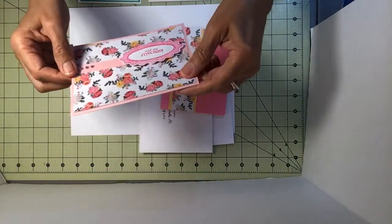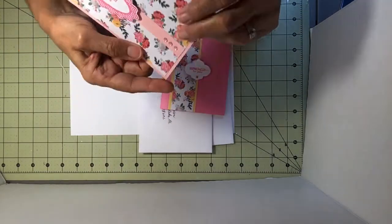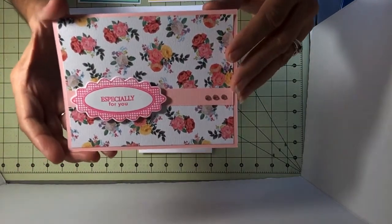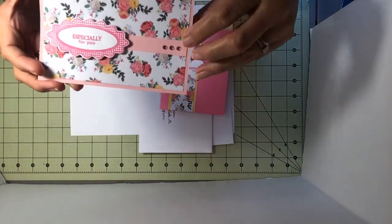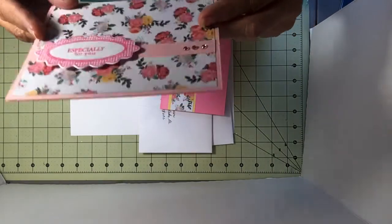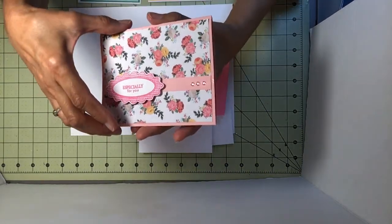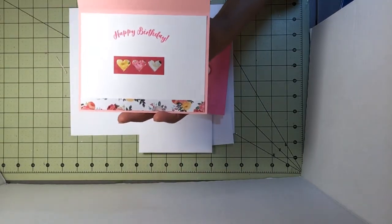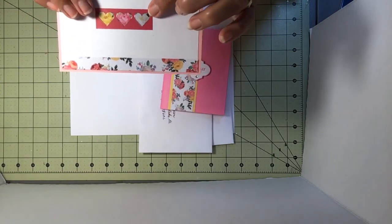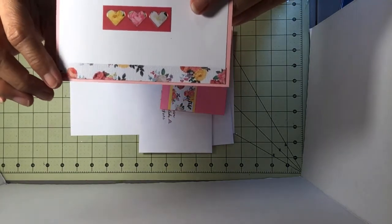Okay, here's the other one that says also especially for you, but I did it this way. I added some bling, popped it up. It's dimensional, however you say it. You open it this way, and it says happy, happy birthday, and I put a sticker there, three hearts, and the rest of the paper.